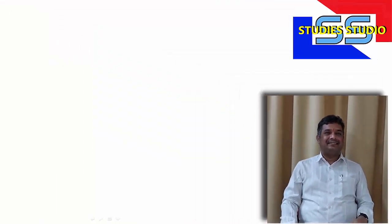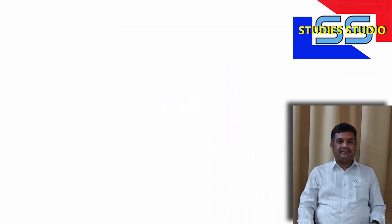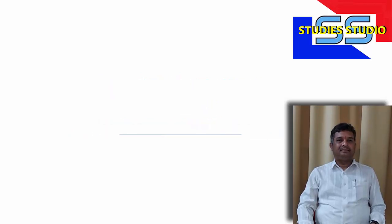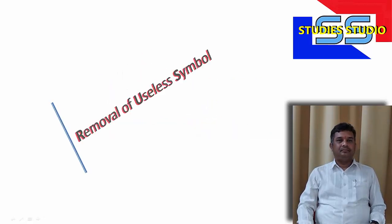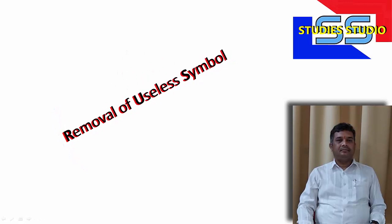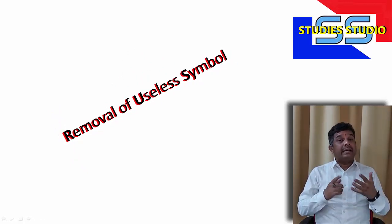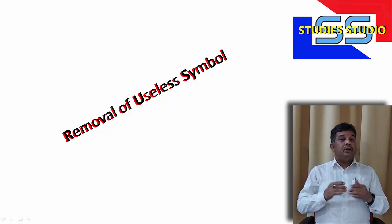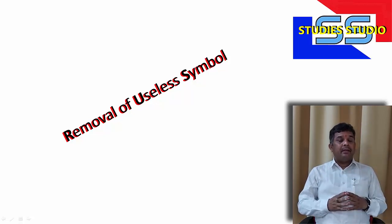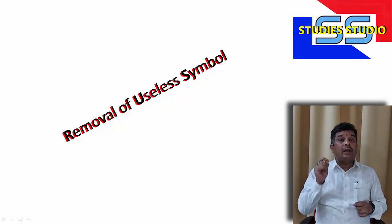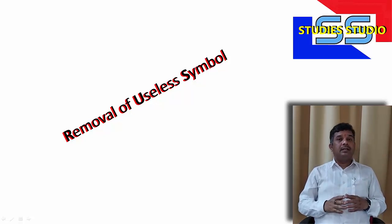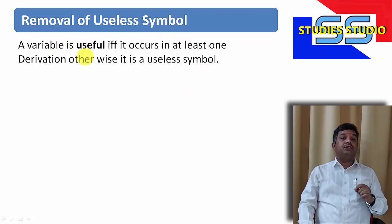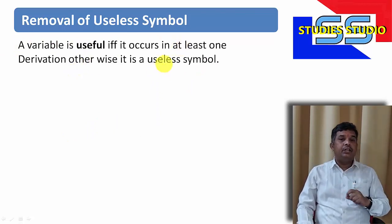So, let us start. In our previous videos, we have learned about grammar, context-free grammar, and ambiguous grammar. In order to remove ambiguity from a grammar, there are many steps we need to follow. One of them is removal of useless symbols. A variable is useful if it occurs in at least one derivation; otherwise we will say it is a useless symbol.